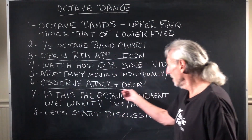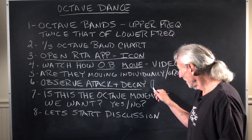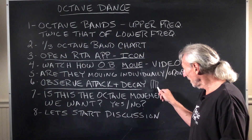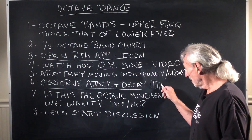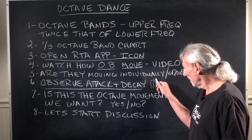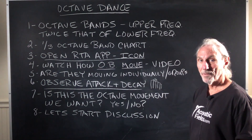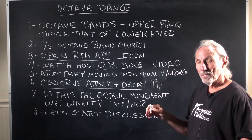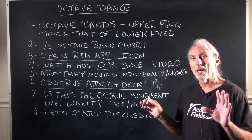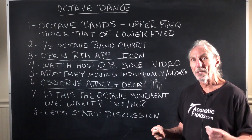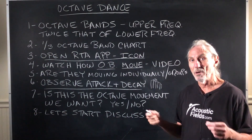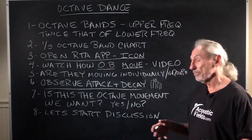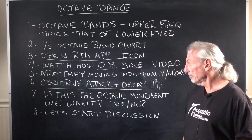Observe the attack and the decay rate. When you have an octave band that strikes and then you see the decay rate — notice that difference. That's the attack and decay. Look at the fundamental and the harmonic and their relationship. I don't want to get too technical here, but I want you to start to get a feel for what music looks like on an RTA and what it sounds like in your room.